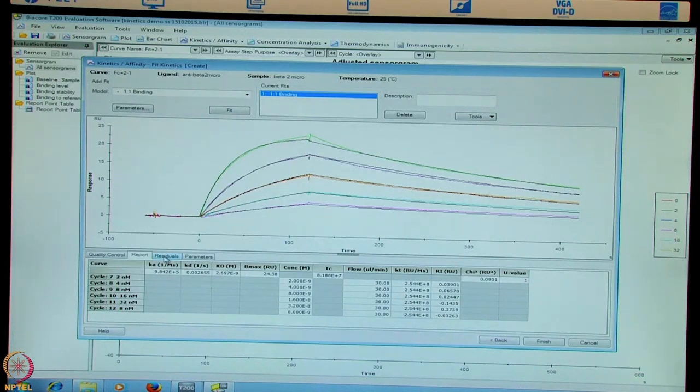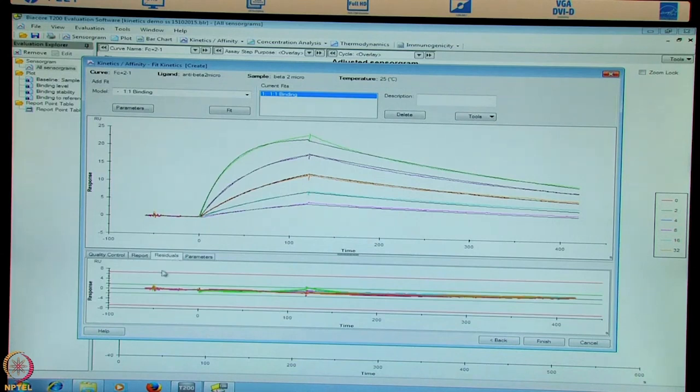We go to the next tab, residuals. The residuals should be aligned between the red lines, preferably between the green lines. And here you can see that the data is completely within green lines. And that indicates the superimposition of the black lines on the colored lines is very close.